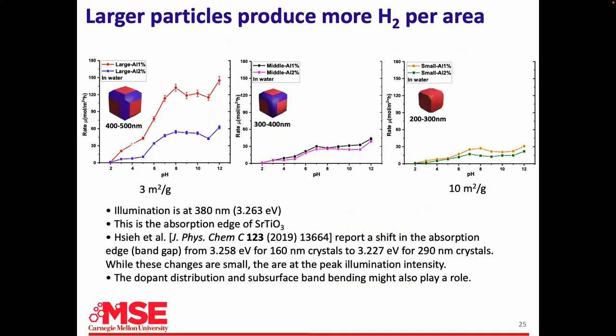An interesting finding that goes against conventional wisdom: particle size is not what everybody thinks. You might have learned that surface area is good for heterogeneous reactions — obviously true — but in this case we actually get more hydrogen from bigger particles. When we normalize by surface area, the bigger particles are much more reactive per unit area. The reason has to do with light harvesting: you need a bigger particle to absorb the light and transfer the carriers to the surface.